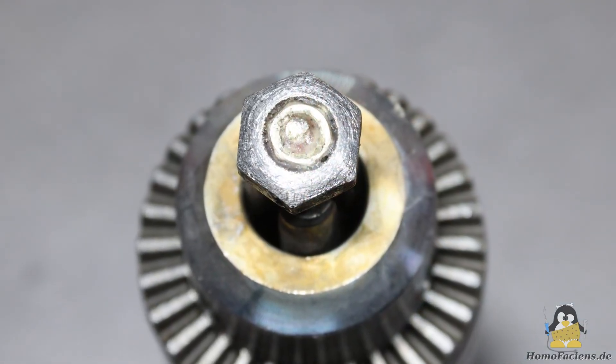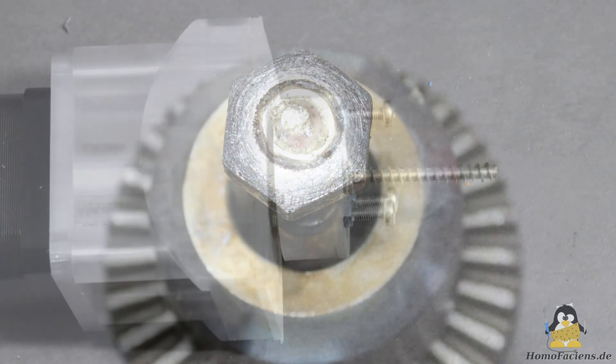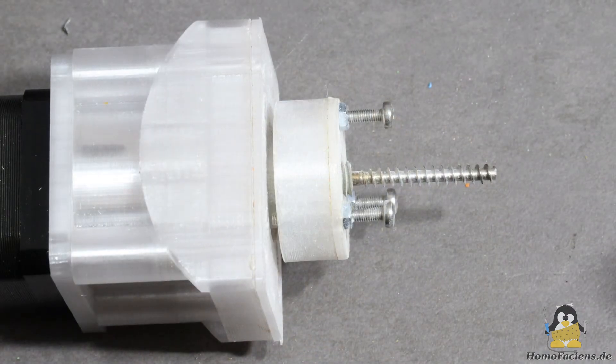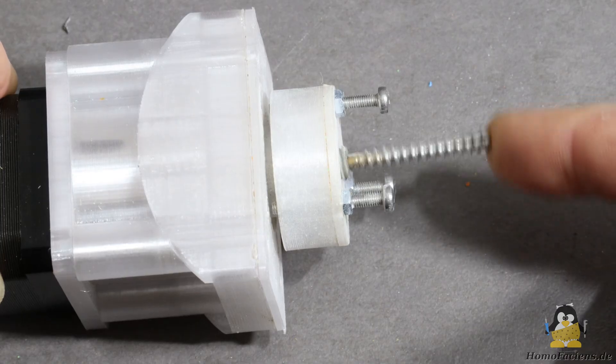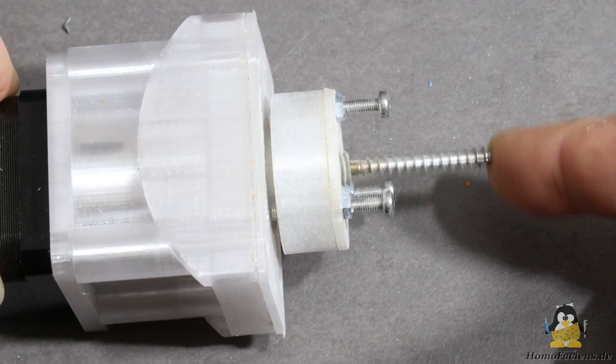The screw head is rounded with a file. This gives the screw an additional degree of freedom in its movement, which reduces the force acting on the ball bearing.